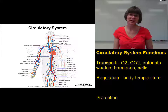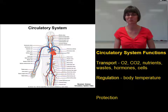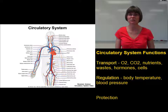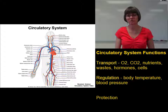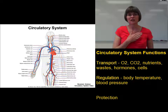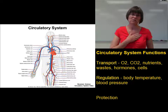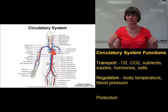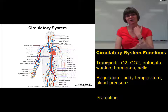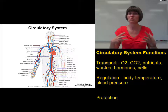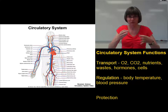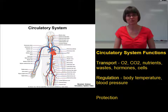A second body condition that the circulatory system regulates is blood pressure. We need adequate pressure in the blood for things to circulate through the body. The circulatory system regulates blood pressure by controlling the rate of the heartbeat — the more blood the heart pushes out, the higher the blood pressure. It also regulates the diameter of blood vessels: dilating them makes them wider and reduces pressure, while constricting them raises blood pressure.